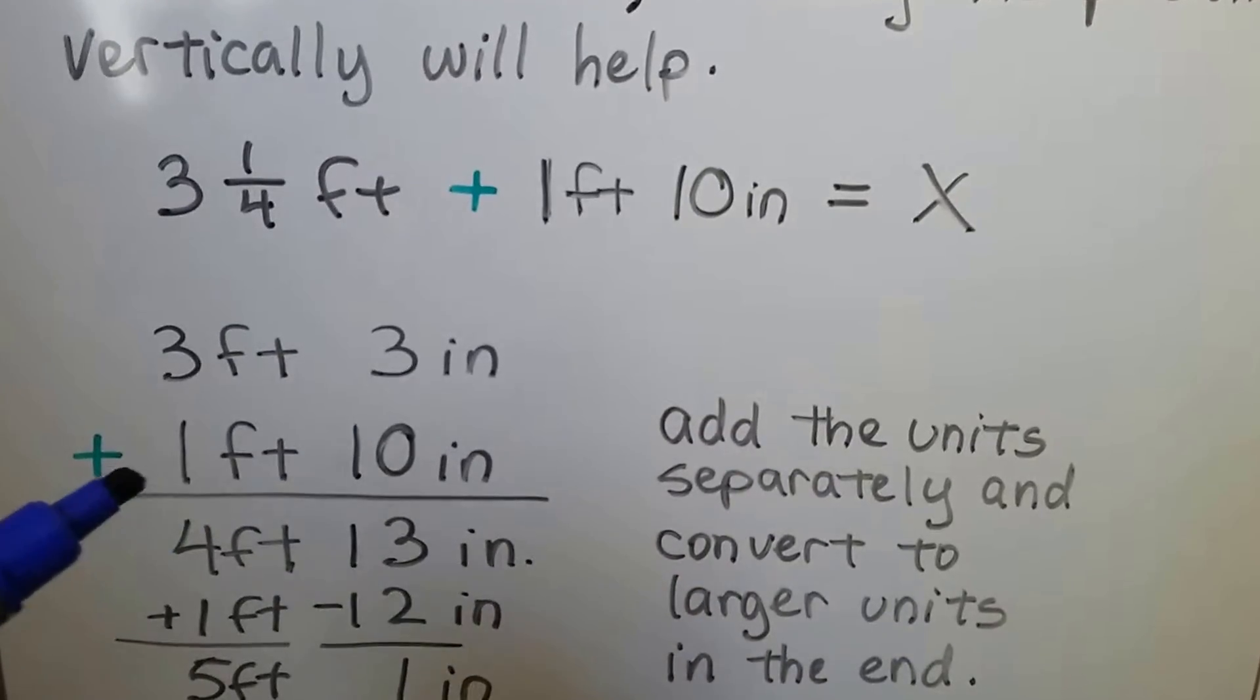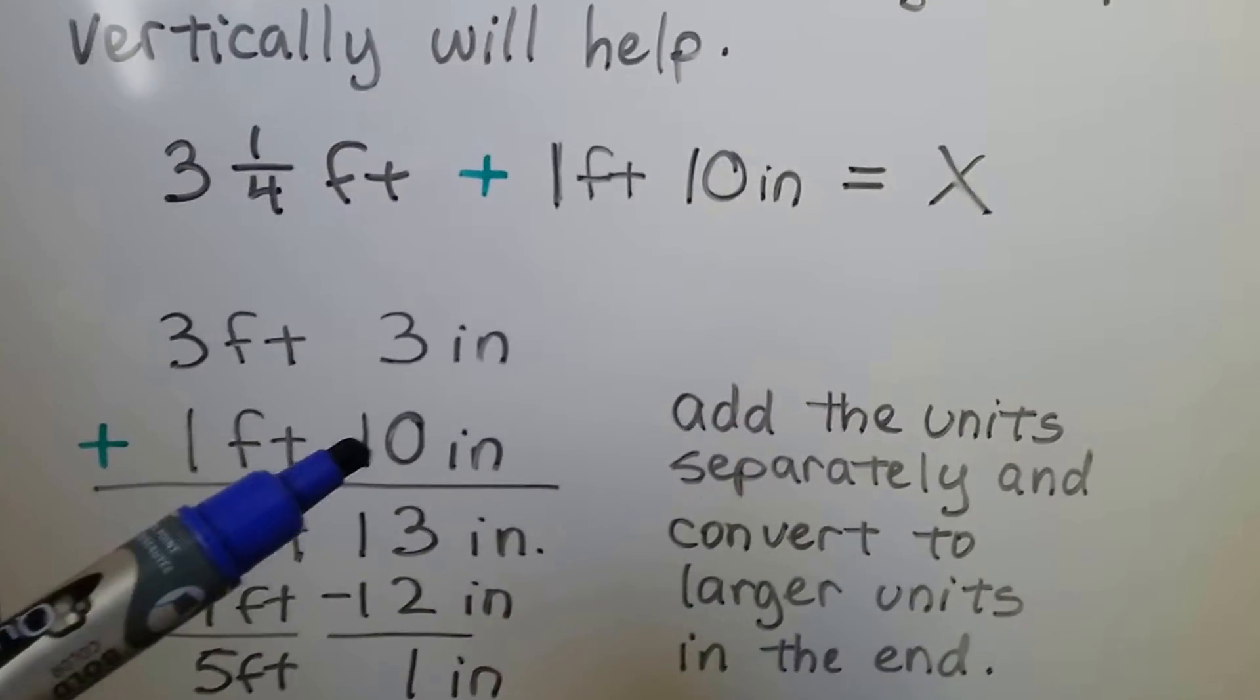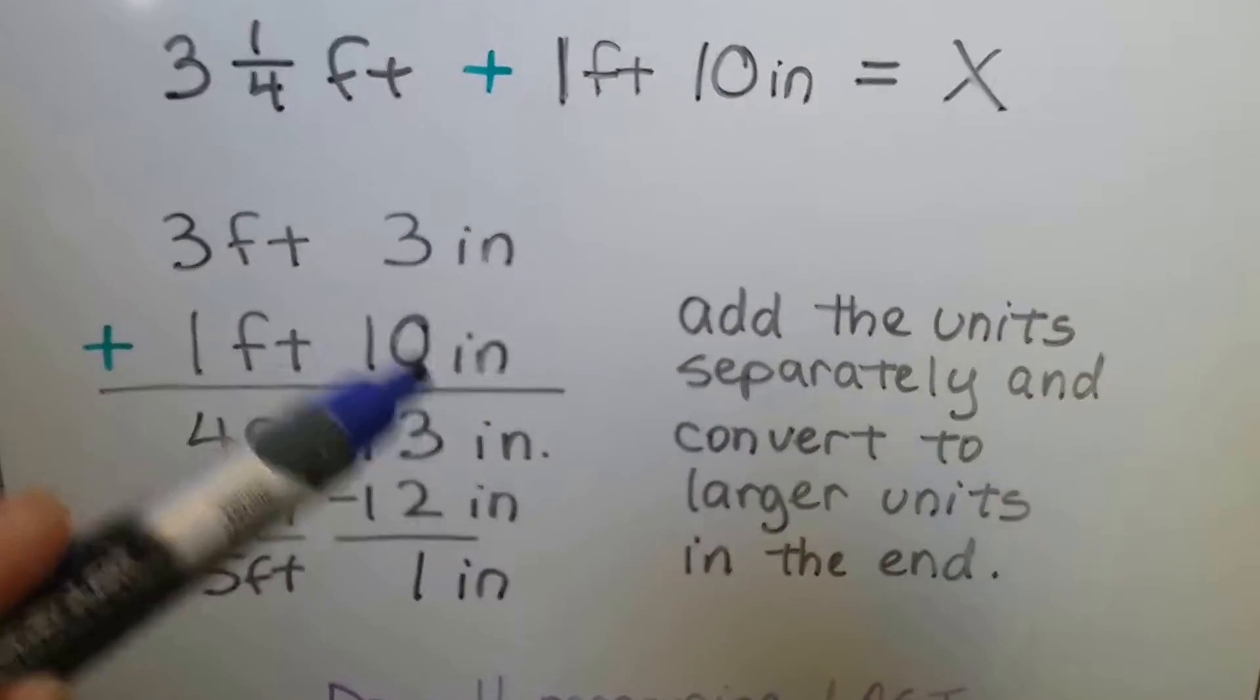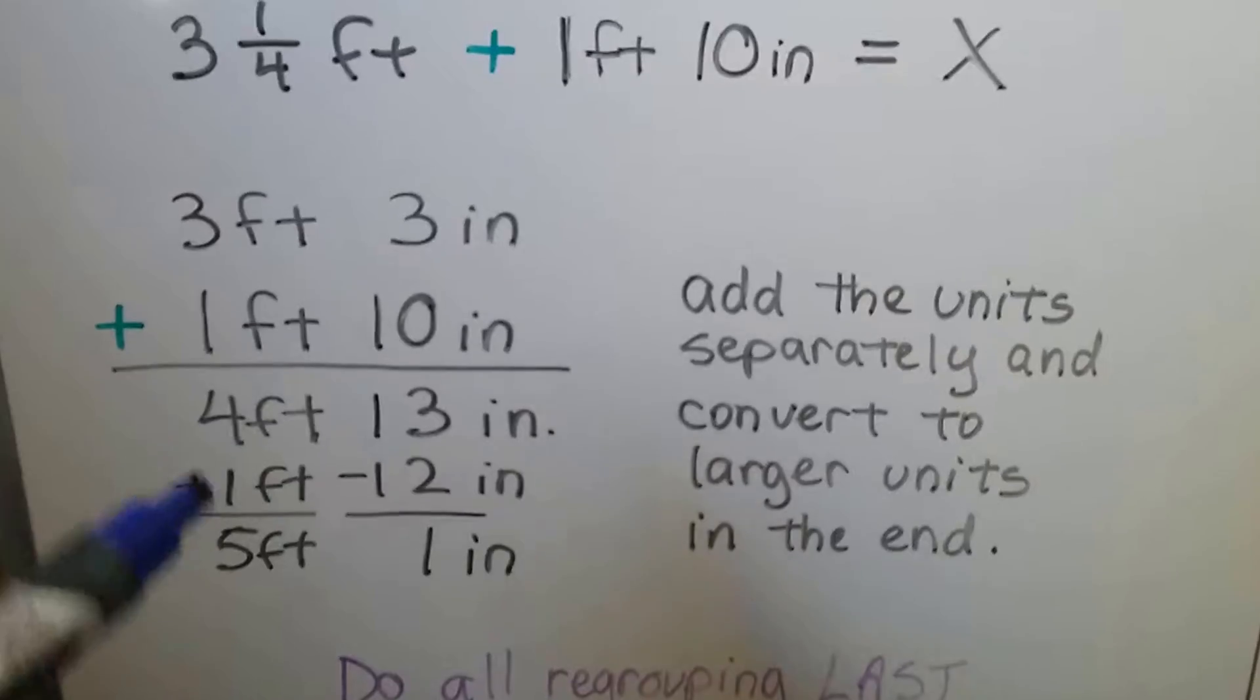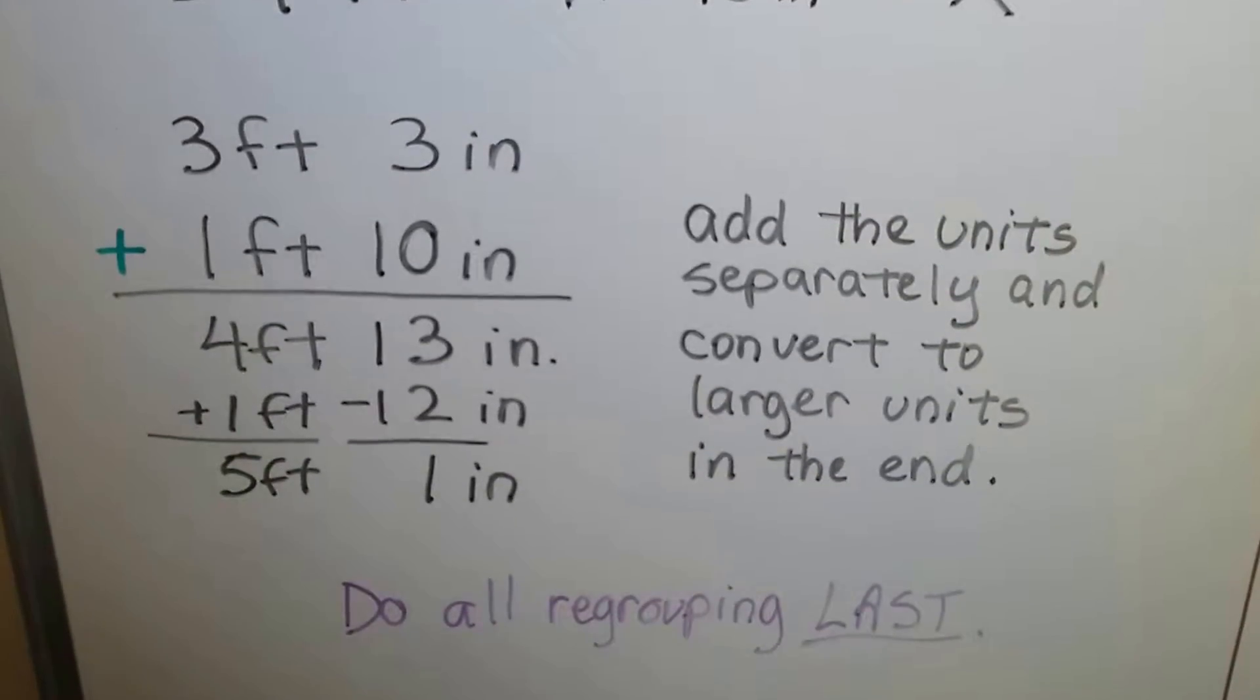So we have 3 feet, 3 inches, and we're going to add 1 foot 10 inches. What we do is we add the inches together and get a total, and then we add the feet together and get a total. Then we convert it to the other units and do the regrouping last.